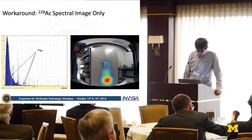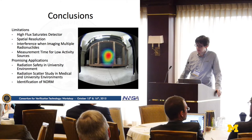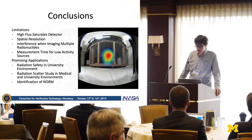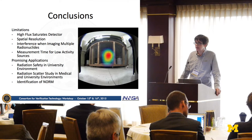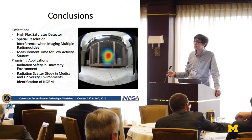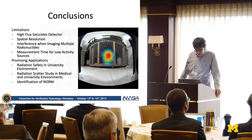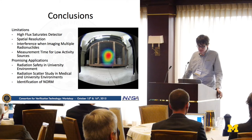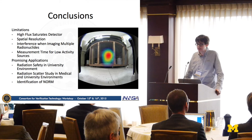In conclusion, we found a few limitations: our model isn't capable of imaging at high flux, there are some spatial resolution concerns, and there can be interference when measuring multiple radionuclides. With lower activity sources, you sometimes have to image for quite a long time to get a well-localized image. On the promising side, applications include radiation safety in university environments, finding lost check sources, radiation scatter studies, and identification of NORM.